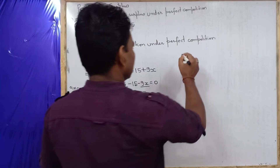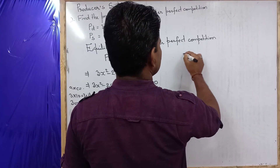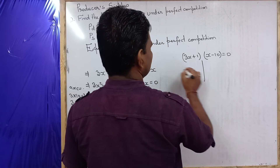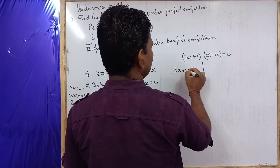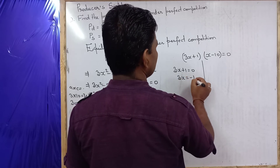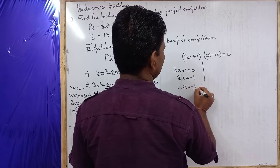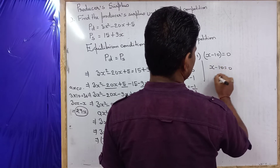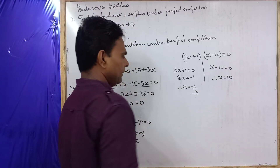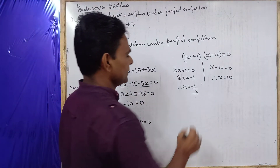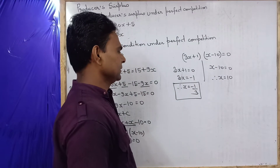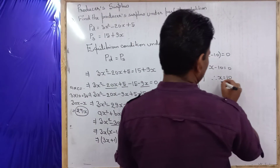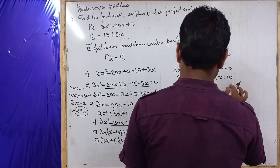From (3x plus 1)(x minus 10) equal to 0: either 3x plus 1 equals 0, giving x equal to minus 1/3, or x minus 10 equals 0, giving x equal to 10. We have two values of x. The negative value is not considered because output can never be negative. So x equal to 10 is the valid solution.